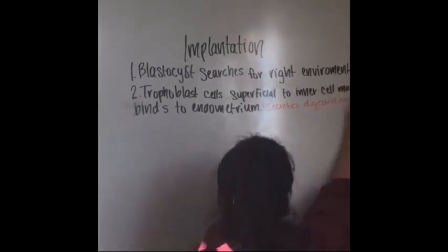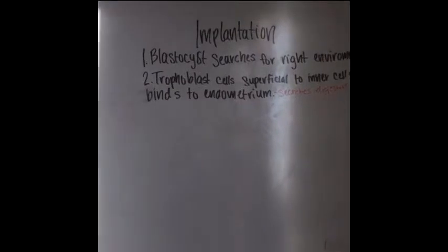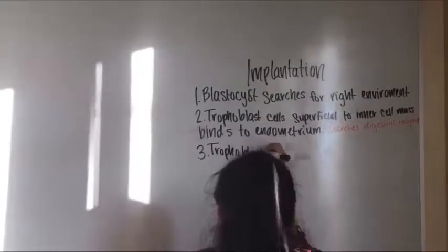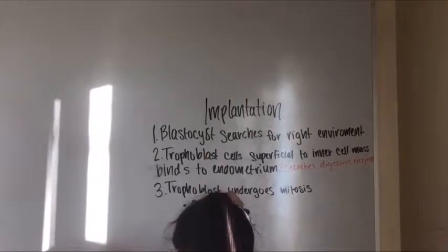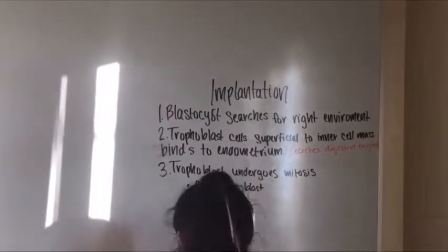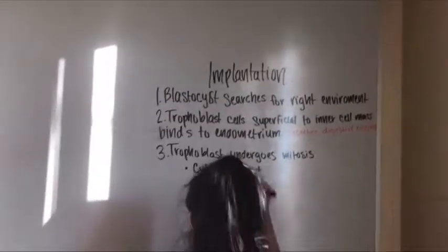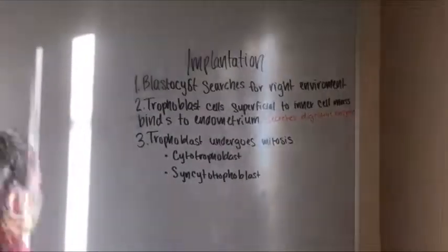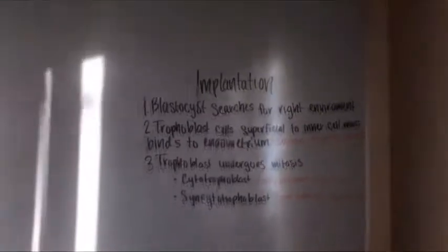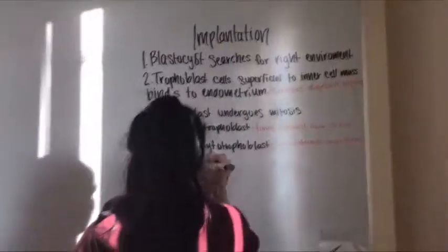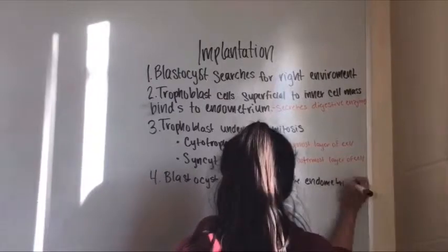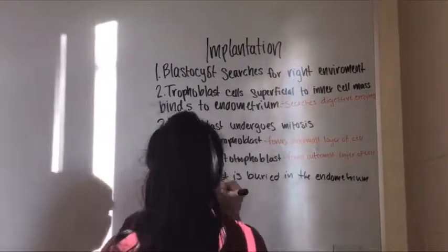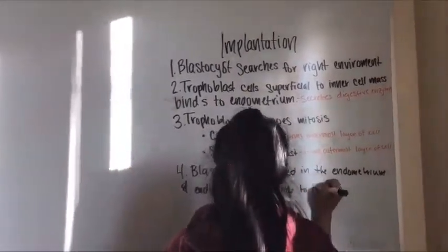During implantation, blastocyst searches for the right environment in the endometrium. This begins at day 6. Trophoblasts will bind to the endometrium when the endometrium secretes digestive enzymes and growth factor. Trophoblasts undergo mitosis in two layers: cytotrophoblasts, which forms the innermost layer, and syncytiotrophoblasts, that forms the outermost layer. Blastocysts go under the endometrium and the cells divide to seal over it.